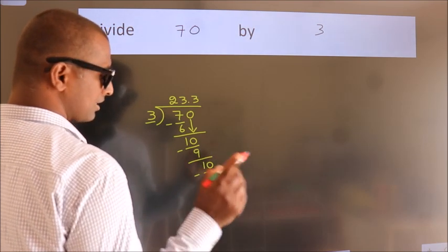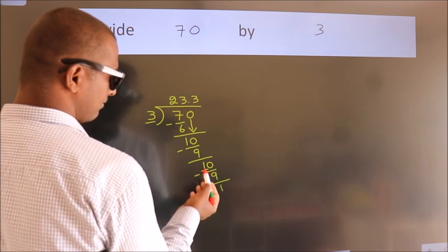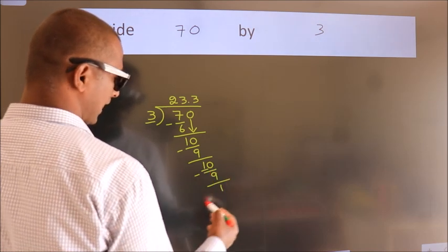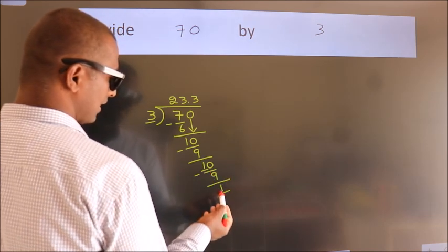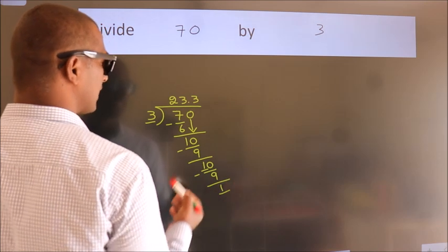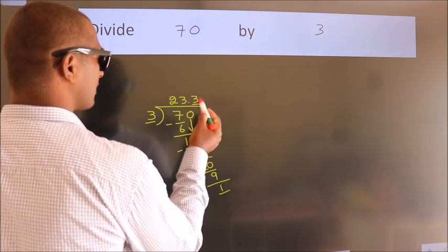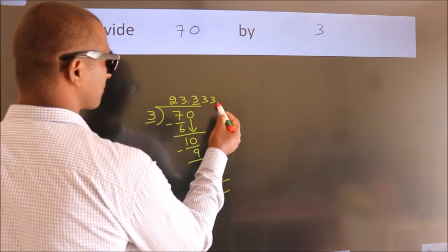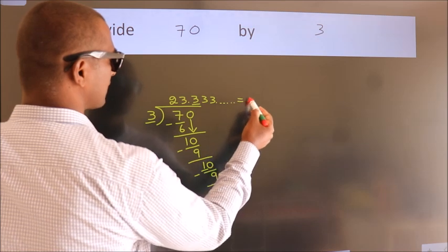Now, you observe. We had 1 here. And we got 1 again. That means this number keeps on repeating. So, this is our quotient.